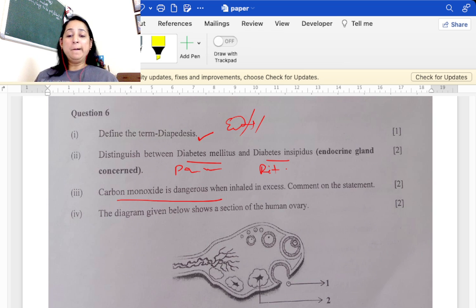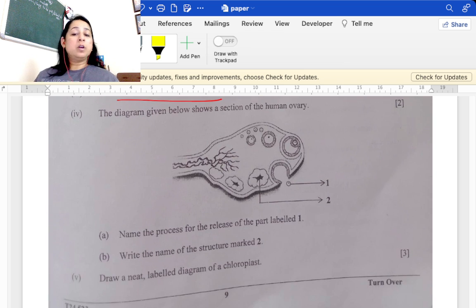The diagram given below, very easy question: one is ova and two is corpus luteum. Process of release is known as ovulation. Structure marked two is corpus luteum.